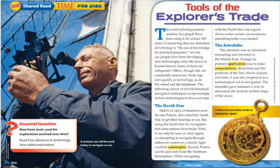The North Star: sailors of early civilizations used the star Polaris, also called the North Star, to get their bearings at sea. But using the North Star for navigation had some serious drawbacks. First, it can only be seen on a clear night, so attempting to navigate through unknown waters on a cloudy night could be catastrophic. Second, Polaris can be seen only from the northern hemisphere. While navigating with the North Star was a good choice under certain circumstances, something better was needed.